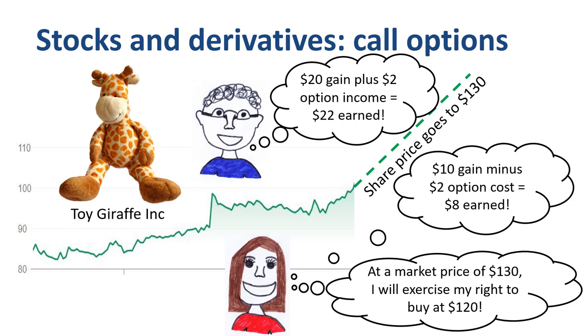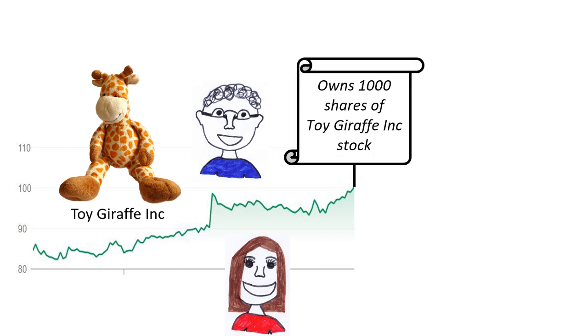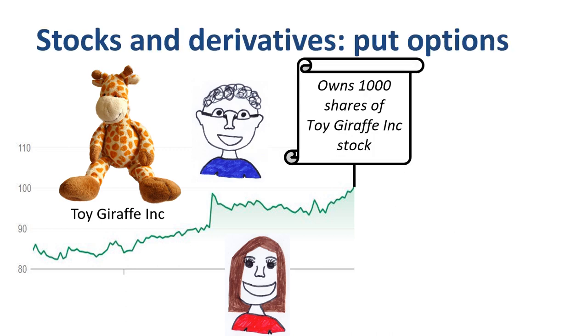By selling a call option to Jane, he has capped — put a limit on — his potential gain from a rising share price. Call options provide the right to buy; put options provide the right to sell.